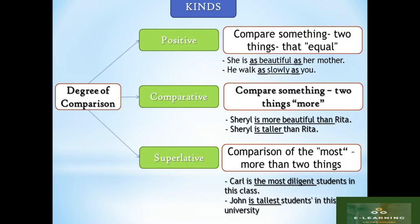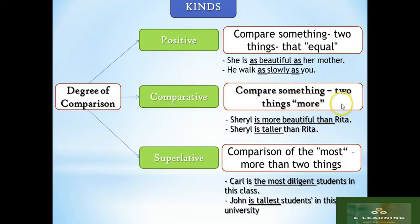The second is comparative degree. Comparative degree is the activity to compare something with another thing — only two things. One is more than the other, indicated by the use of the word 'more.' For example, 'Cheryl is more beautiful than Rita.' We also use -er for short adjectives, for example 'Cheryl is taller than Rita.' So comparative degree compares two different things — only two. Remember.